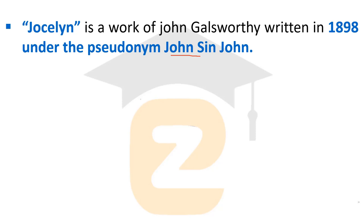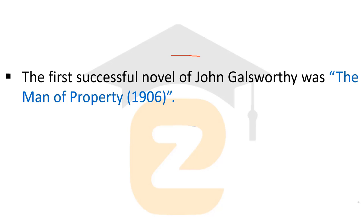The first successful novel of John Galsworthy was The Man of Property. It was the first successful work of John Galsworthy and was published in the year 1906.